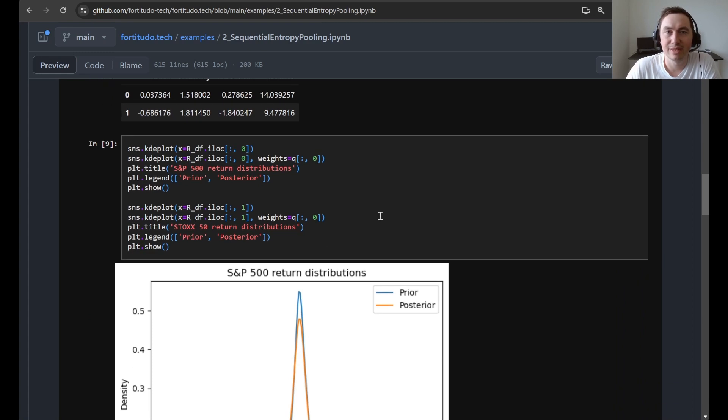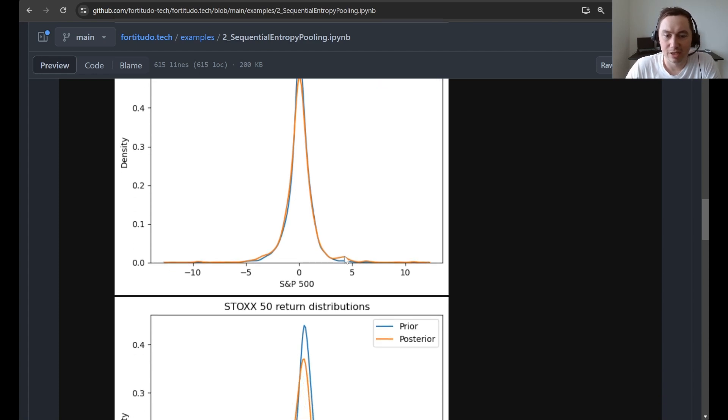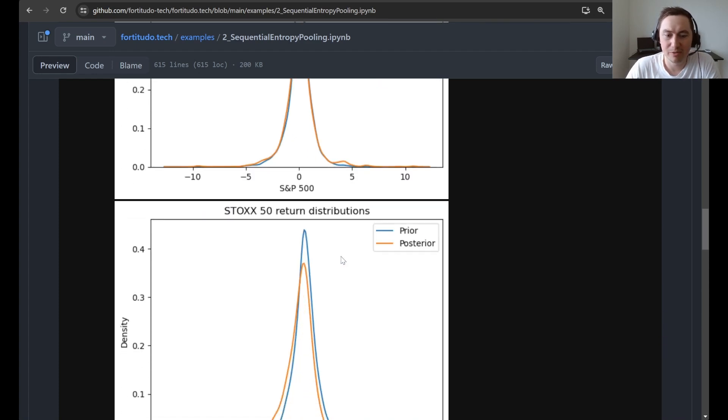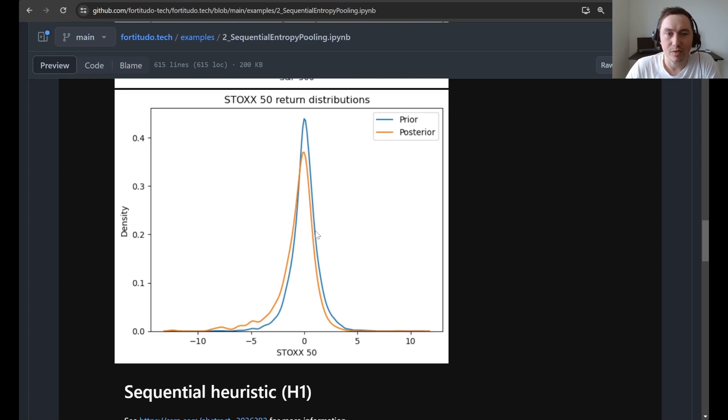We also plot some kernel density estimates of the prior and posterior distributions for two assets just to see how they have changed. And so we can see we get some extra mass here and some changes here also. Alright.